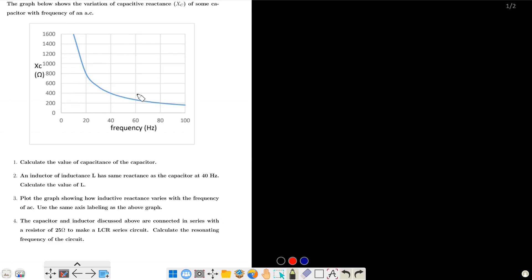This graph has Y axis showing X_L in ohms and X axis showing frequency in hertz. The graph shows capacitive reactance. Now how to plot this graph?